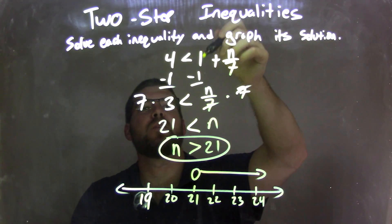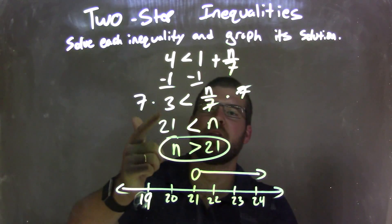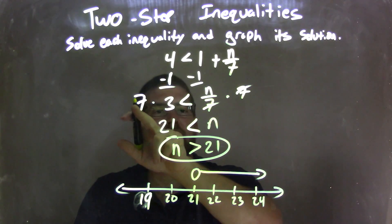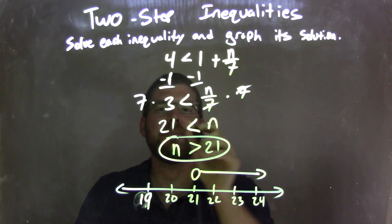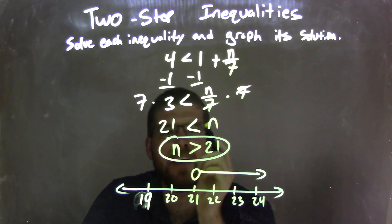So let's recap. We have 4 is less than 1 plus n over 7. I subtracted 1 on both sides, giving me a negative 3 on the left, and n over 7 on the right. I then multiplied both sides by 7, giving me n by itself on the right, and 7 times 3 being 21 on the left. I then rewrote this to have n come first, so I had to flip the inequality to do that, and I have n now is greater than 21.